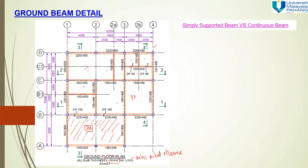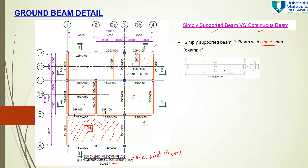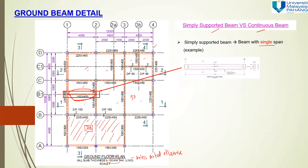First of all, you must know the difference between a simply supported beam and a continuous beam. Here is an example of a simply supported beam, which is a beam with a single span. This beam is located here — from this end to this end, only one span — so this is a simply supported beam. This one is also simply supported because it has only one span, supported by this beam and also by this beam.